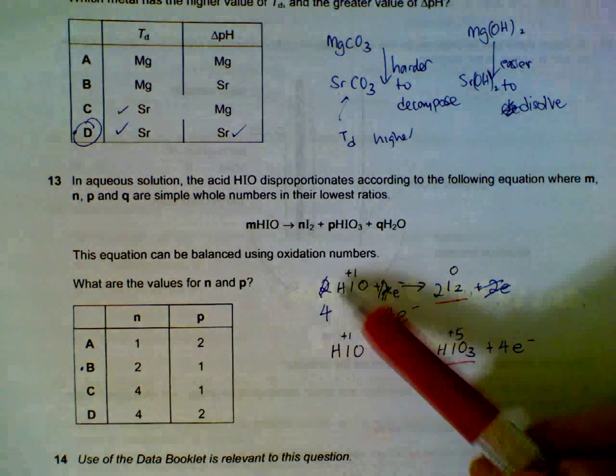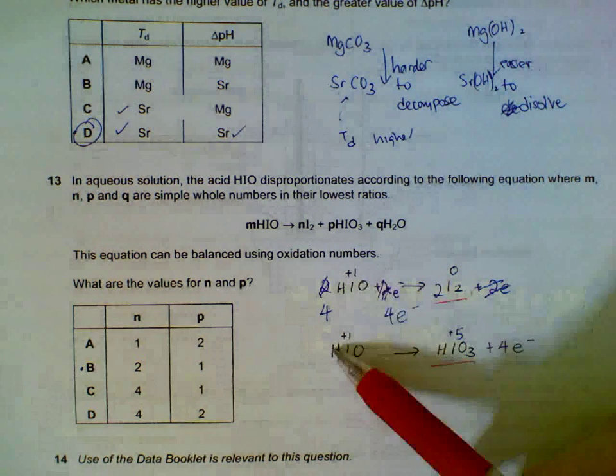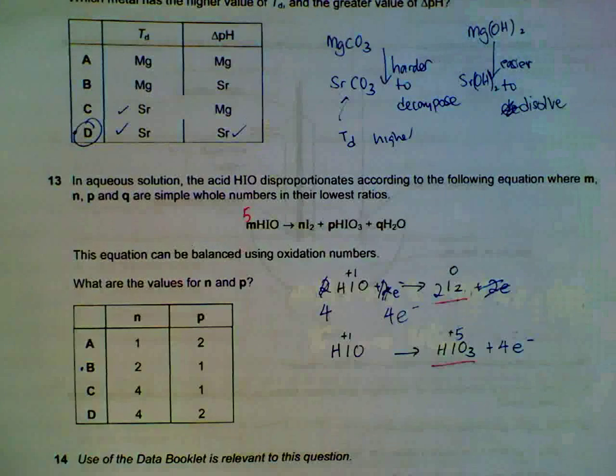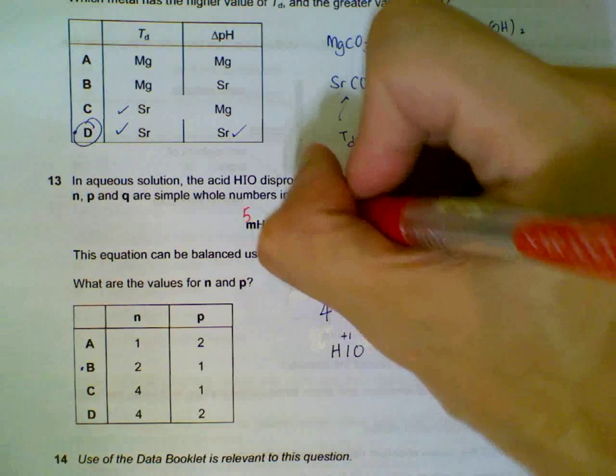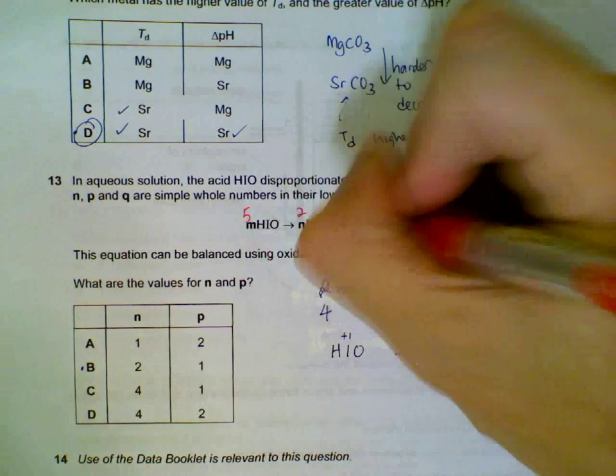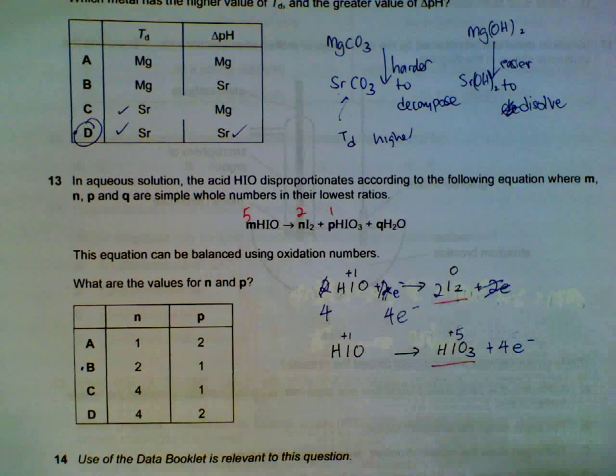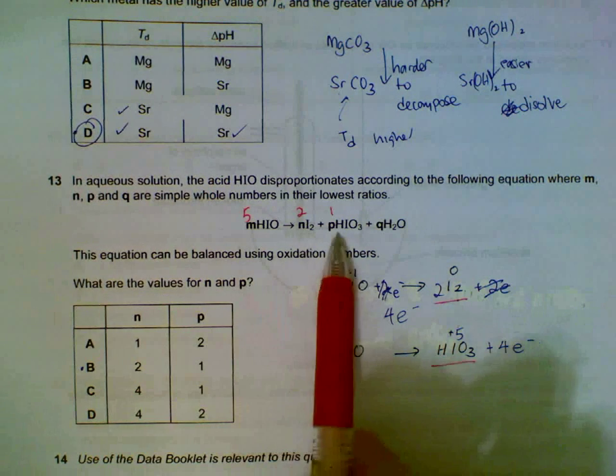If we need the information, actually 5 moles of HIO3 is involved. In this case, we do need the information of M anyway. We only need N and P.